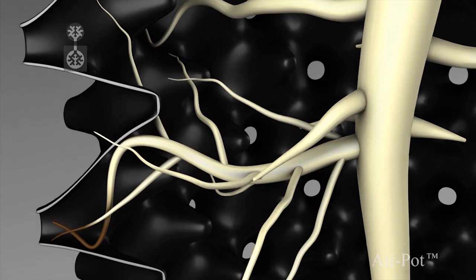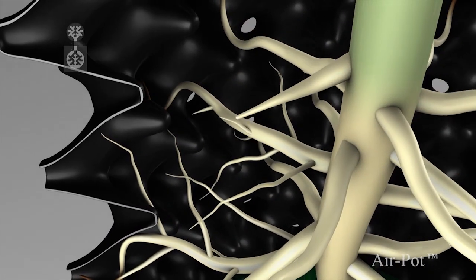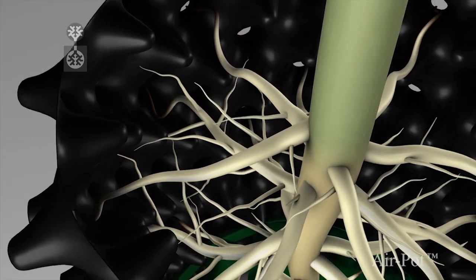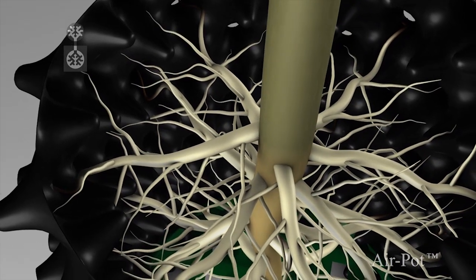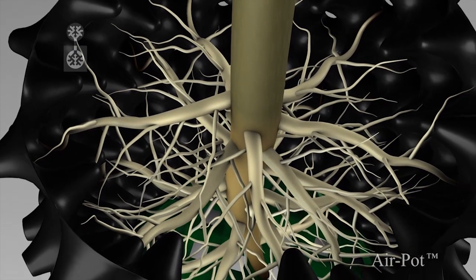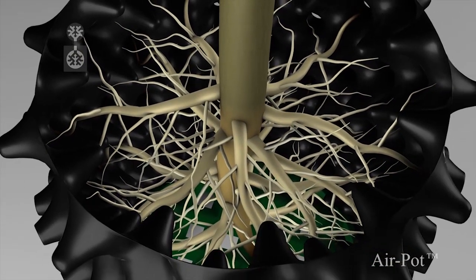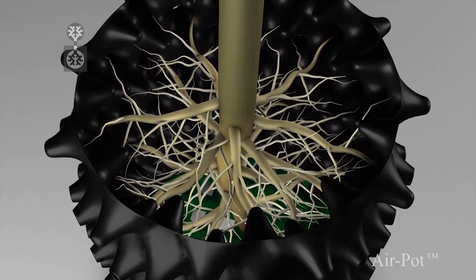As each new root finds its way to an air hole, the process is repeated and the plant rapidly develops a mass of outward pointing fibrous roots. This enables the plant to absorb more nutrients and water, which stimulate faster growth.